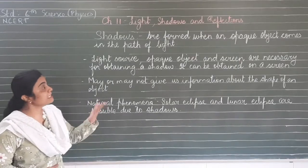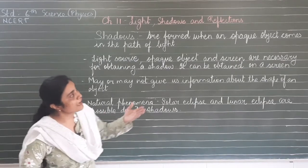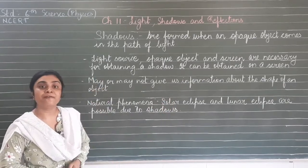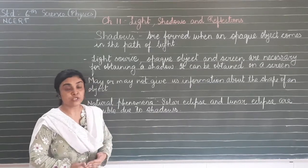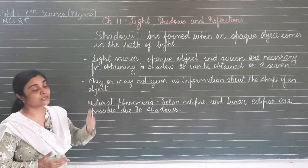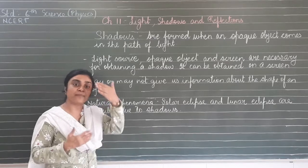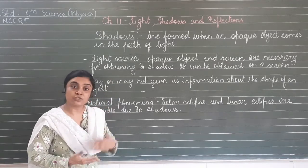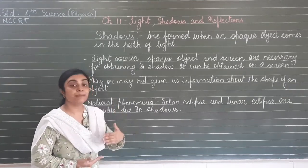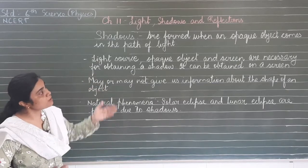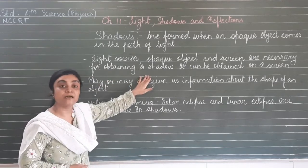Now let us see what is a shadow and how shadows are formed. Shadows are formed when an opaque object comes in the path of light. Since an opaque object does not allow light to pass through it, when it is placed in the path of light, the light is stopped and a shadow is formed. A light source, an opaque object, and a screen are all necessary for obtaining a shadow.